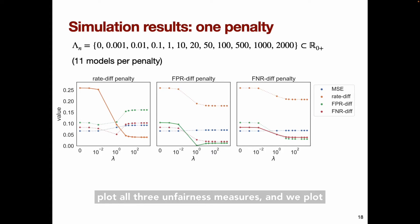As you can see, the penalty successfully decreases the disparity. So as lambda increases, the orange line goes down in the left panel, the green line goes down in the middle panel, and the red line goes down in the right panel. Again, the penalty is applied in training. These values here are measured on the test set. Decreasing the target unfairness measure also doesn't incur a huge cost in mean squared error. So in each panel, the blue line, MSE, goes up only slightly as the target measure decreases.